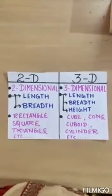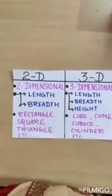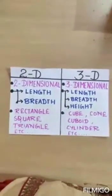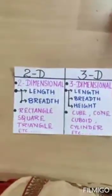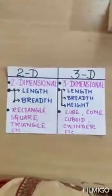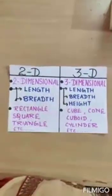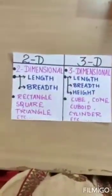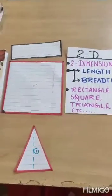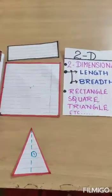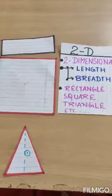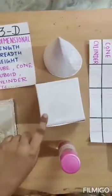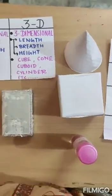Now let's understand 2D and 3D shapes. 2D means two-dimensional and 3D means three-dimensional. The two dimensions in a 2D object are length and breadth. The dimensions in a 3D shape are length, breadth, and height. Examples of 2D shapes are rectangle, square, triangle, and many more. Examples of 3D shapes are globe, cube, cuboid, cylinder, and many more.